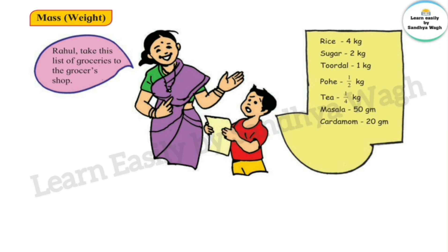The list includes 4 kg of rice, 1 kg of sugar, masala 50 g, and cardamom 20 g. Some items on the list are in kilograms and some are in grams.